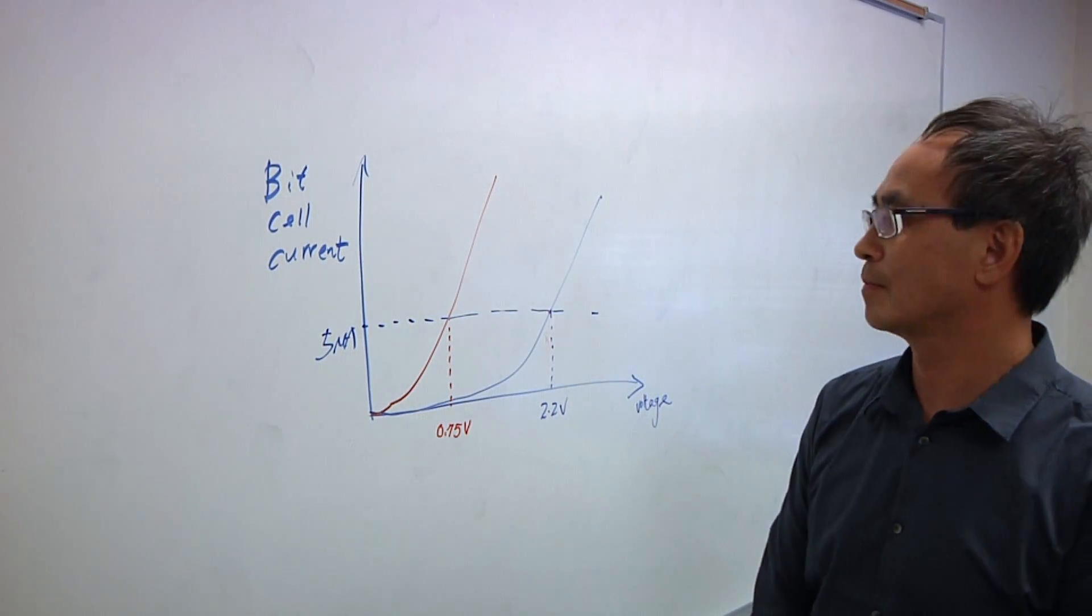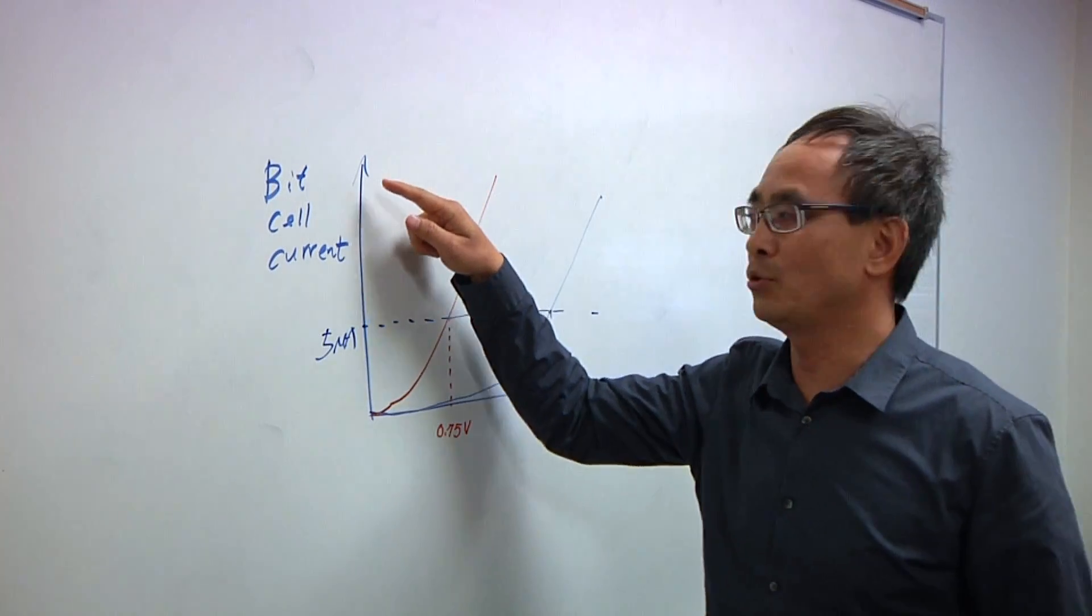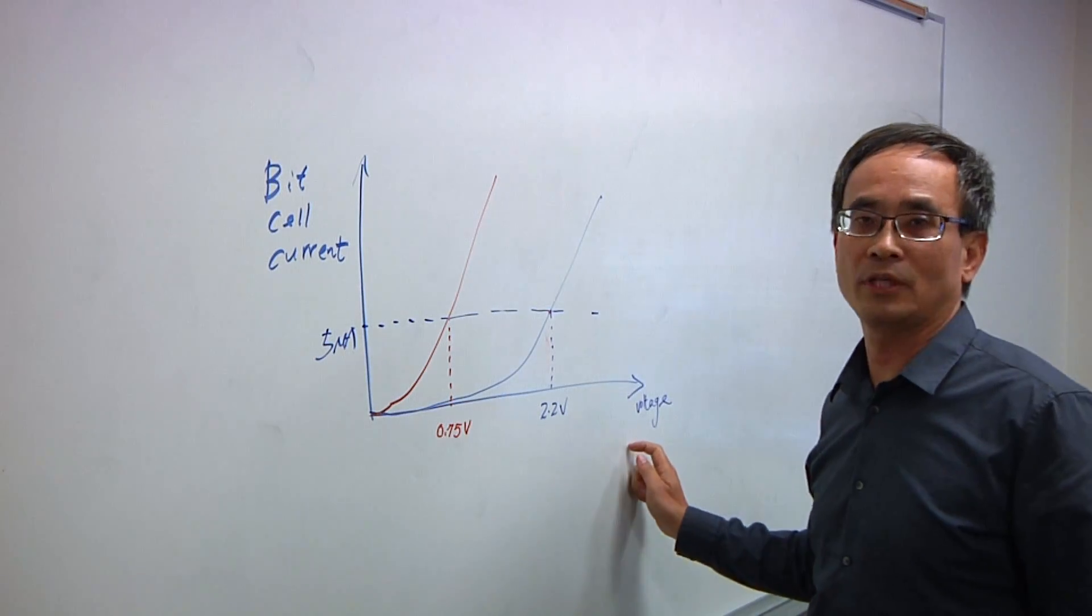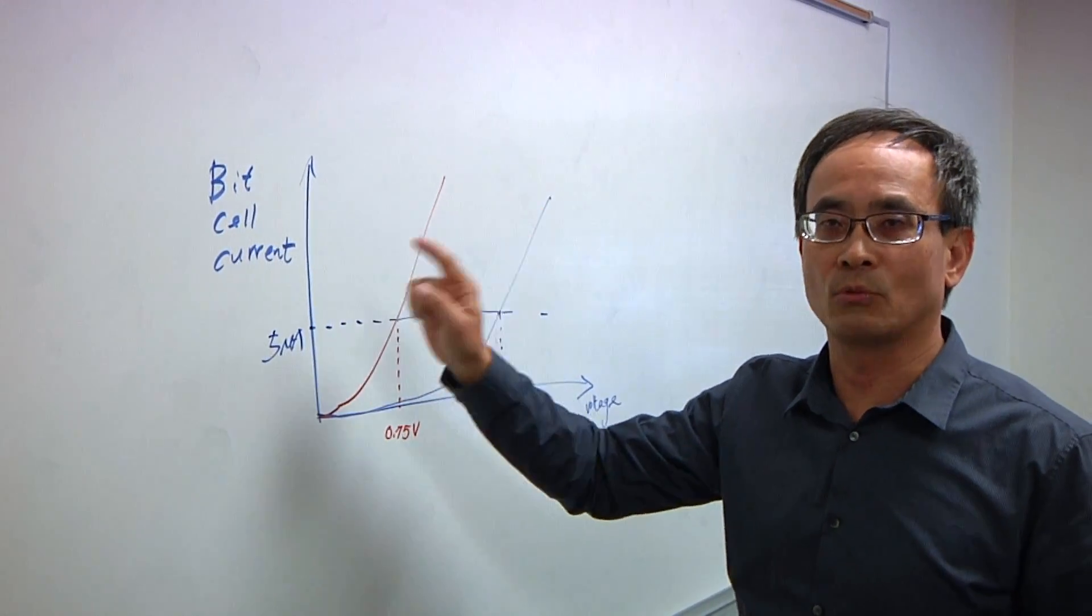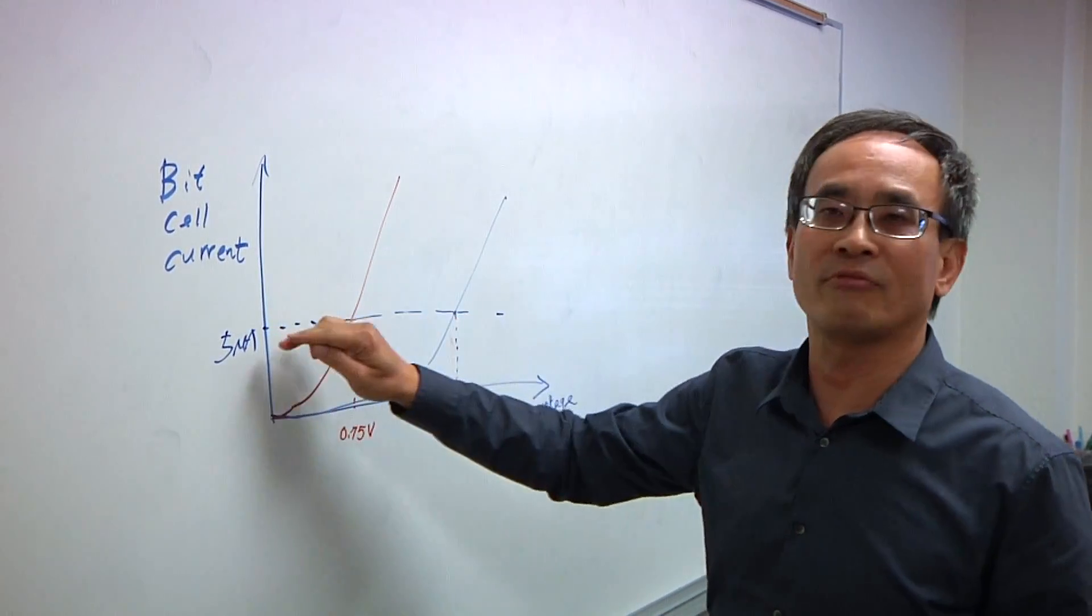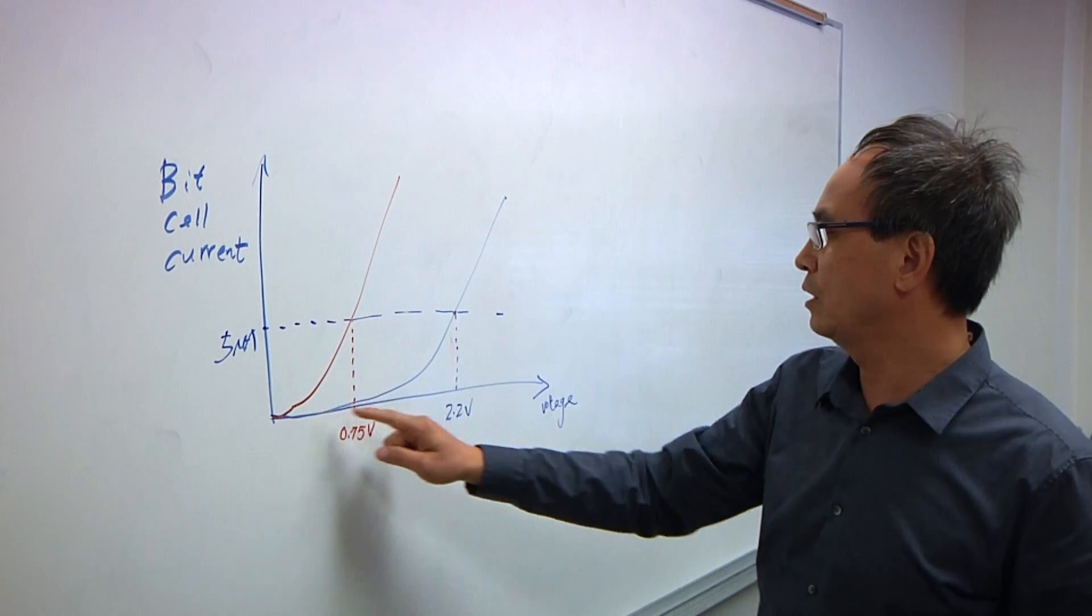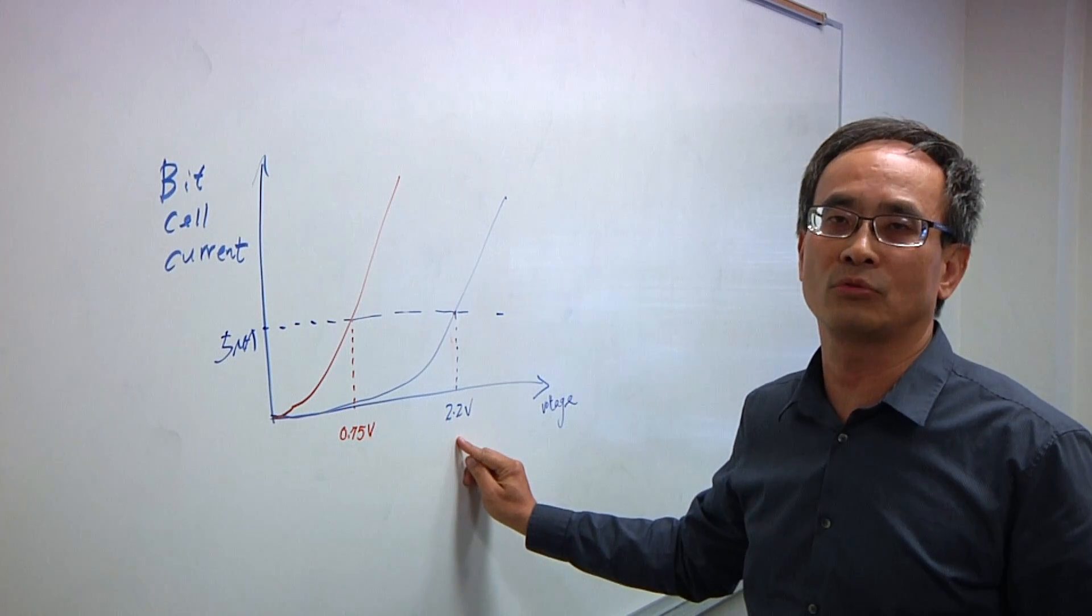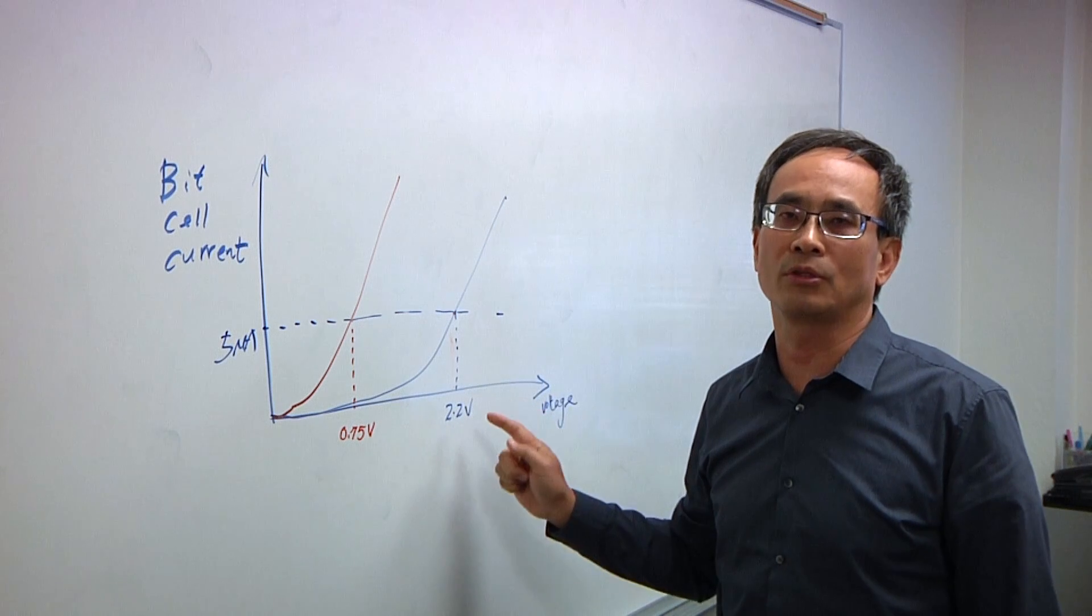So what are we looking at here? We are looking at the y-axis, it is the bit cell current, and the x-axis is voltage. And usually for a bit cell to be programmed as one, to be recognized by sense amp, we need at least about 5 microamps. For the current OTP technology, we have the 5 microamps turn on voltage around at 2.2 volts. That means usually we need to have the voltage above 2.2 volts.